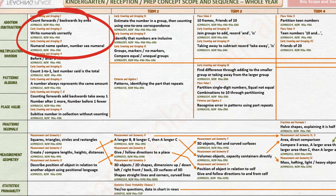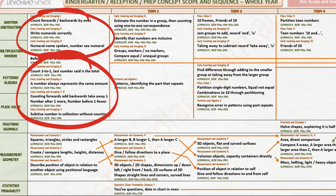Students investigate conventions including counting forwards and backwards by ones, writing numerals correctly, and recognising numerals. They use these conventions to develop their understanding of counting with one-to-one correspondence, explaining that the last number said is the total and that a number always represents the same amount.